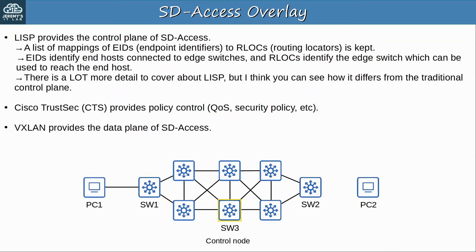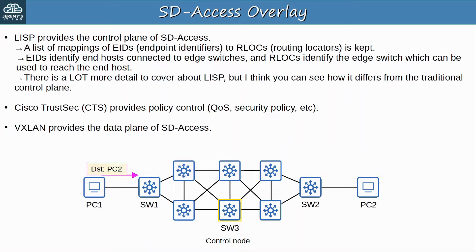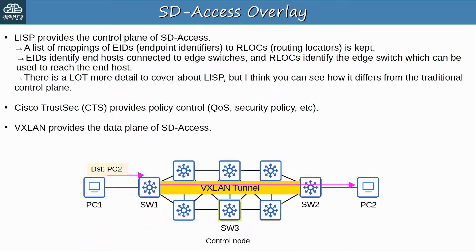SW3 is a control node, so it is important for the function of LISP. PC2 is connected to SW2, and it tells the control node that PC2 is reachable via SW2, so SW3 creates that mapping. Now PC1 wants to send traffic to PC2, so it sends it to the default gateway SW1. SW1 asks SW3 how it can reach PC2, and SW3 informs it that PC2 is reachable via SW2. So the message from PC1 is forwarded over a VXLAN tunnel between SW1 and SW2.